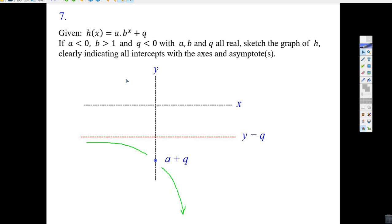It must be cutting through some place, which if I let x equal zero, I get the y-intercept a plus q, and there's your asymptote.